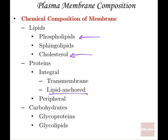There are peripheral proteins that are just attached to the outside of the cell. And then there are carbohydrates — various proteins attached to carbohydrates, called glycoproteins, and carbohydrates attached to lipids, called glycolipids. The word 'glyco' means carbohydrate.